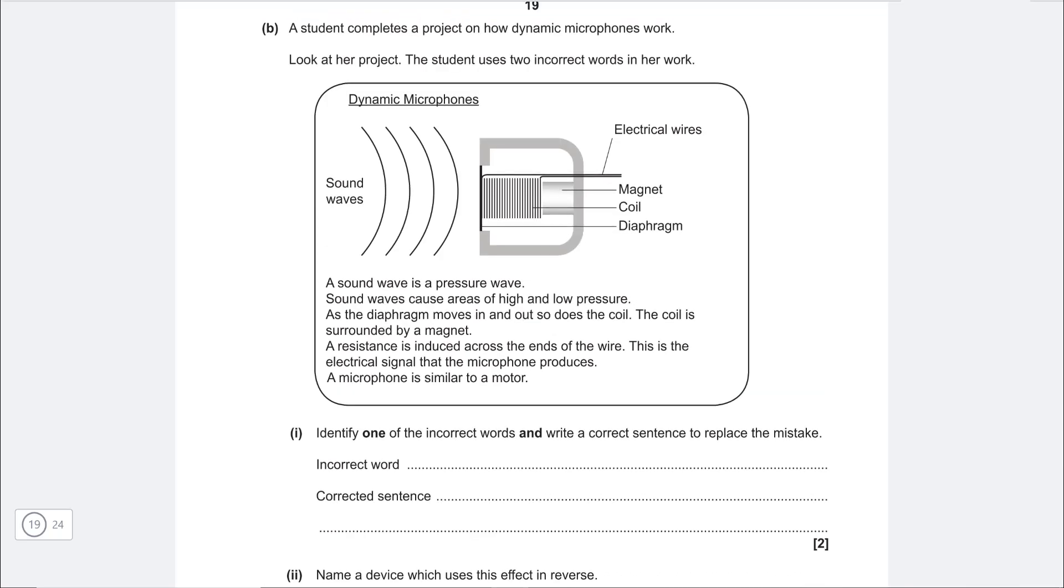Here's an interesting one. So we have a student's project that we need to correct. What we need to do is identify one of the incorrect words and write a correct sentence to replace the mistake. Now let's read this. A sound wave is a pressure wave. Sound waves cause areas of high and low pressure, which is fine. As the diaphragm moves in and out, so does the coil. The coil is surrounded by a magnet. A resistance is induced across the ends of the wire.